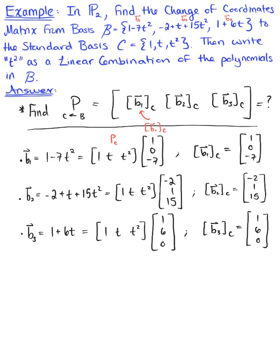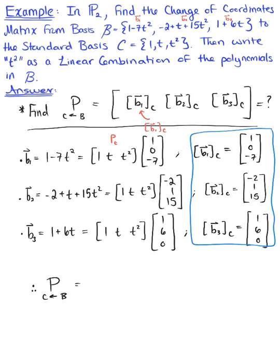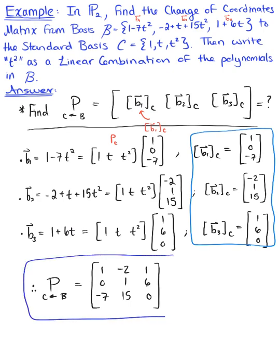We now use these three column vectors to define the change of coordinates matrix from basis B to basis C. Therefore, the change of coordinates matrix from basis B to basis C is the 3 by 3 matrix: [1, -2, 1; 0, 1, 6; -7, 15, 0]. This is the first part of our final answer.